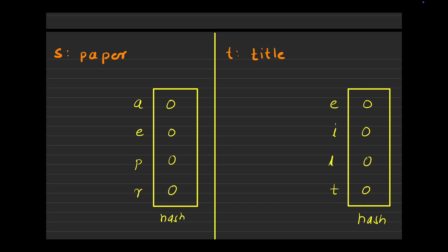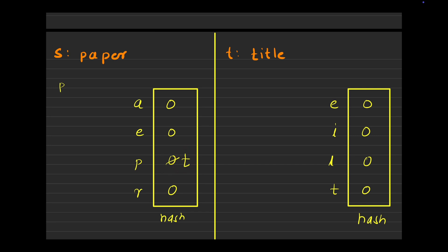I come across P. First, I check: is my P mapped with anyone? No — initially all values are 0, which means none of the characters are mapped. I can map P to T. But before I map T to P, I need to check whether T is not already mapped to someone else. T is not mapped with anyone, so I can simply map T to P and mark it as 1, because T is now mapped.